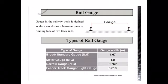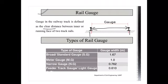The first component of the railway track is the rail gauge. As shown in the picture, the gauge is measured as the distance between the inner or running face of the two rail sections — that is, the clear distance between the inner or running face of the two rail tracks. We will discuss the various types of railway gauges, their requirements, classification, and how to select the appropriate gauge type.